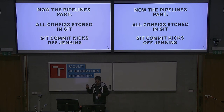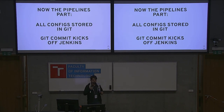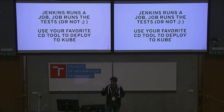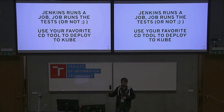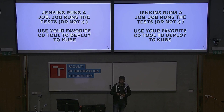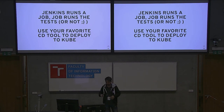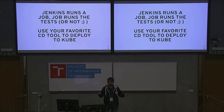All the configs are stored in Git. A commit to master kicks off Jenkins, which most of you in the DevOps world would be familiar with. Jenkins runs a job that can run tests for the Prometheus configs as well, just like you do your tests for the code — you should also be writing tests to test the cardinality of your Prometheus metrics. Then use your favorite CD tool to deploy it to Kubernetes. Simple.